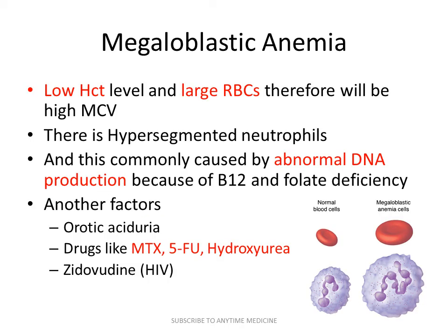If we are deficient in either vitamin B12 or folate, we will develop certain syndromes like megaloblastic anemia. In megaloblastic anemia, symptoms include low hematocrit level and large blood cells, therefore high mean corpuscular volume (MCV), and hypersegmented neutrophils. This is commonly caused by abnormal DNA production due to vitamin B12 and folate deficiency.